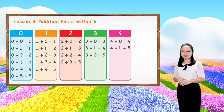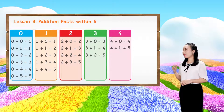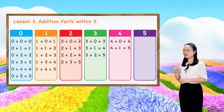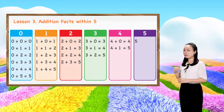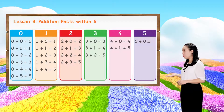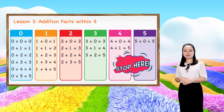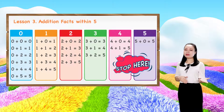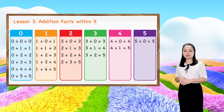Now, let's learn addition by fives. 5 plus 0 equals 5. We'll stop here for now because we're just learning addition facts within five.